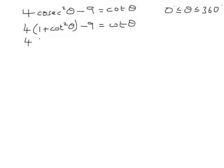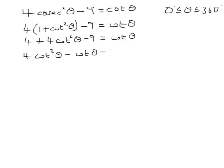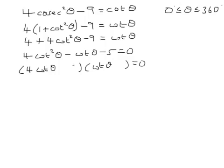Then multiply out the brackets and simplify to get a quadratic in cot theta. We've got 4 cot squared theta minus cot theta — 4 minus 9 is minus 5 — so we've got that. This then factorises: you've got to have 5 and 1, minus there and plus there.